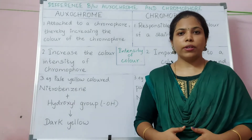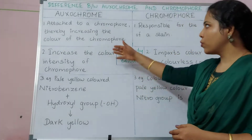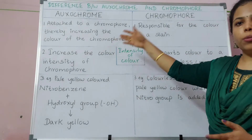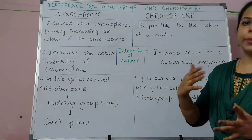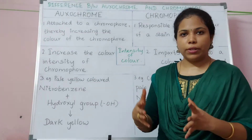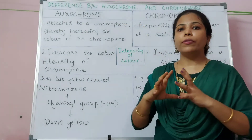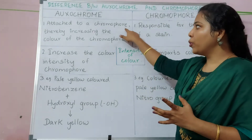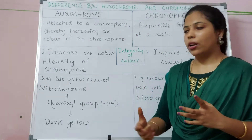Good morning everyone. Today's topic is about differences between auxochrome and chromophore. Auxochrome, chromophore, and benzene ring are components of a stain. Auxochrome is a group of atoms that are attached to a chromophore, which increases the intensity of color of the chromophore.